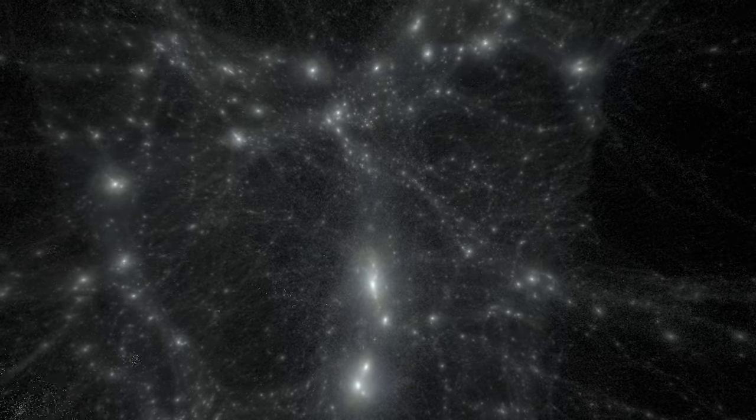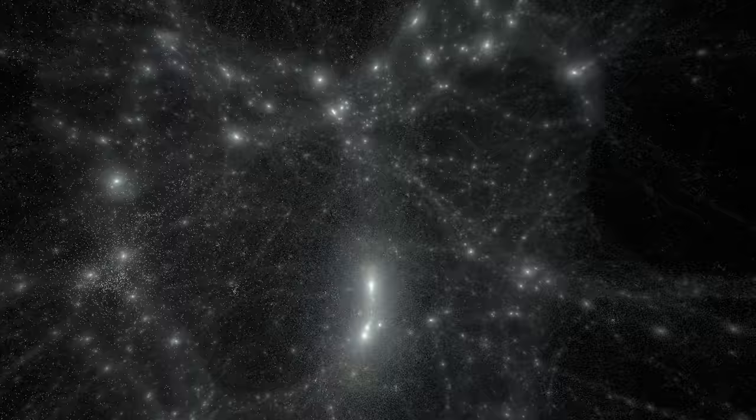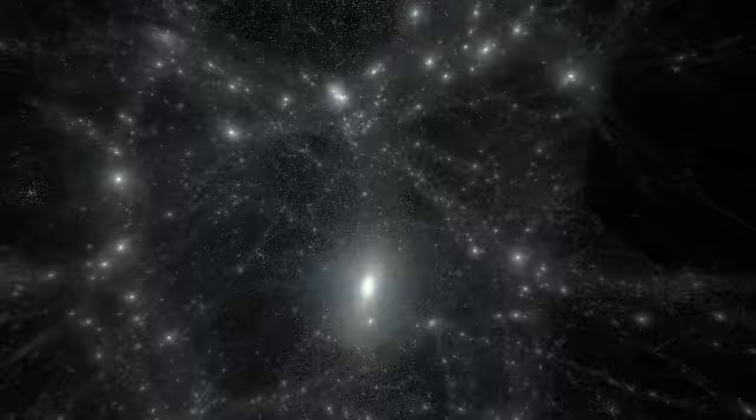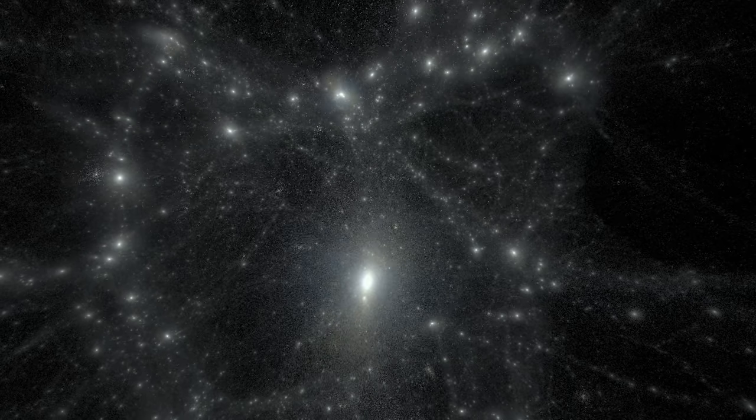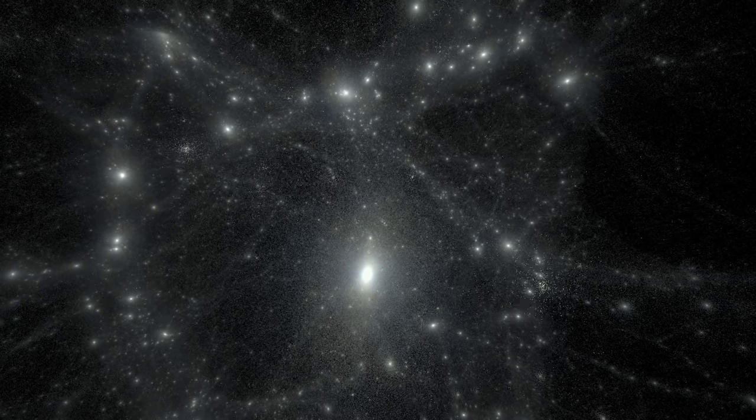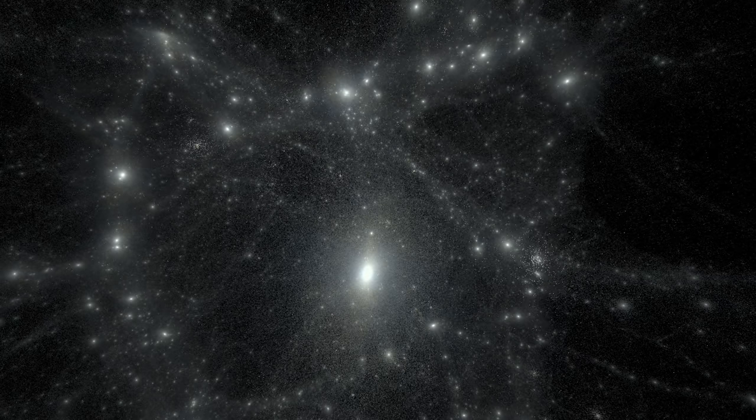Numerical simulations like this one show the merging of matter into complex structures over billions of years. It shows us that galaxies are not distributed evenly in space, but rather form giant filamentary structures called the cosmic web.